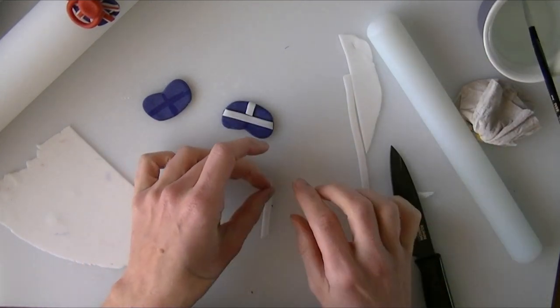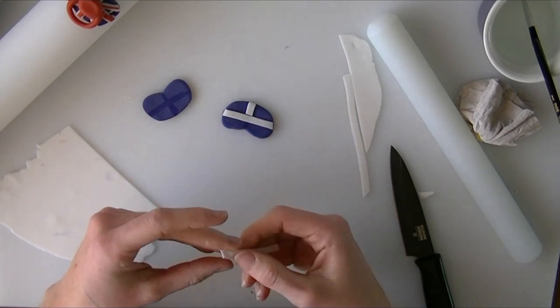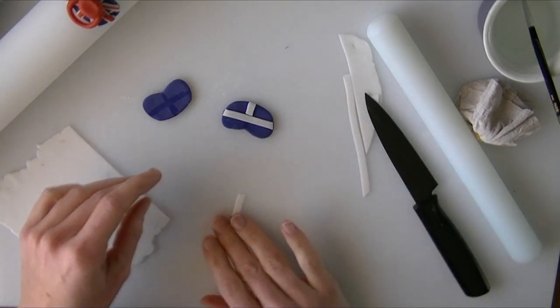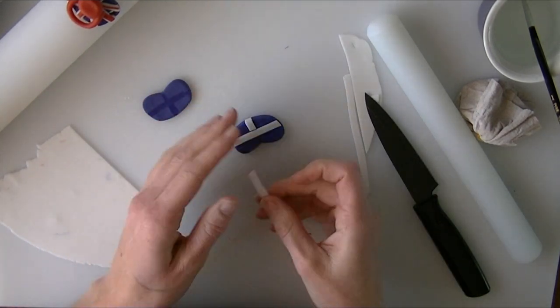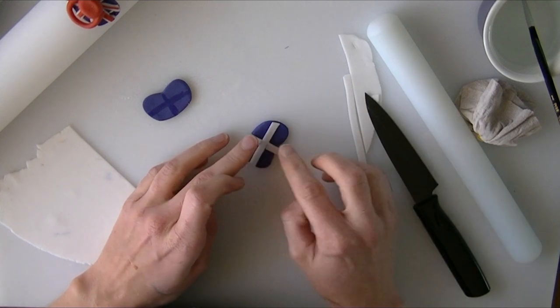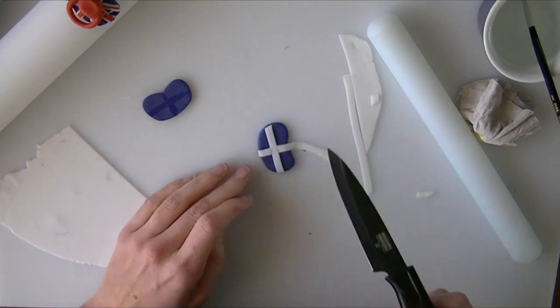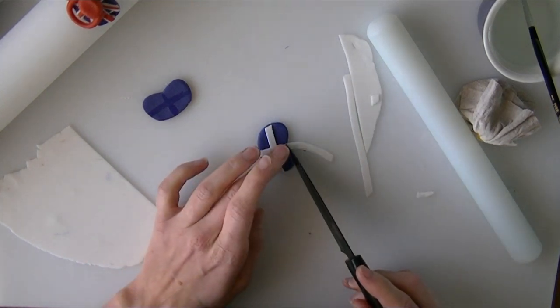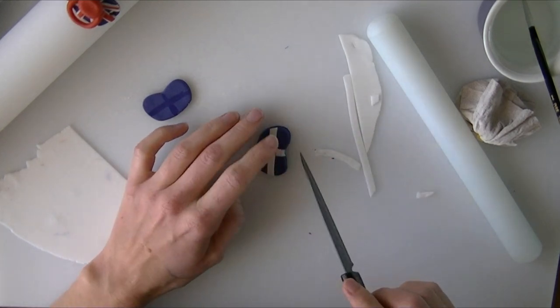Turn it around. Just cut a straight edge again. Make sure that you've lined it up with the bit below. Again we're just going to trim that off.